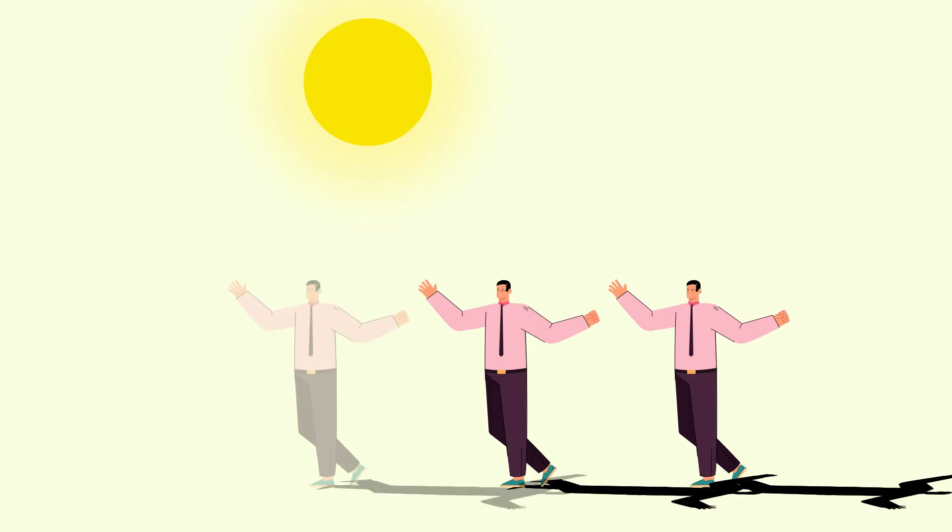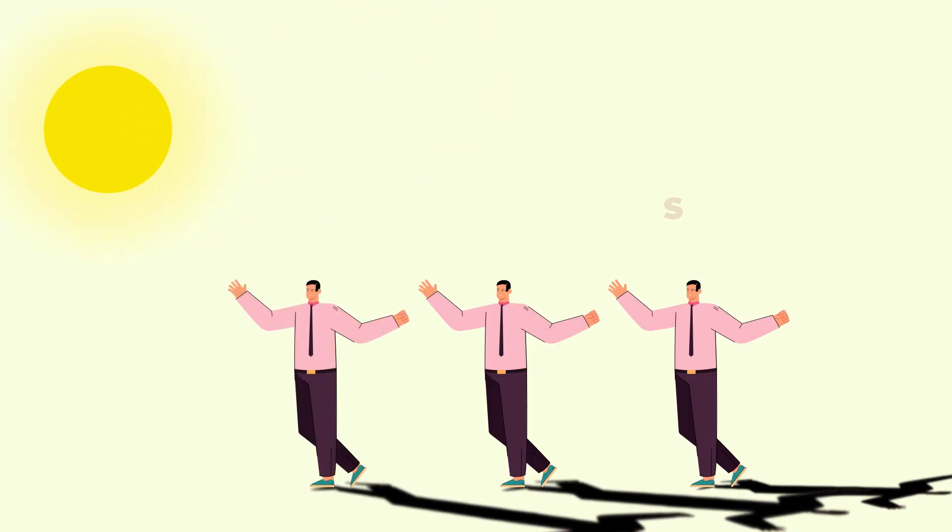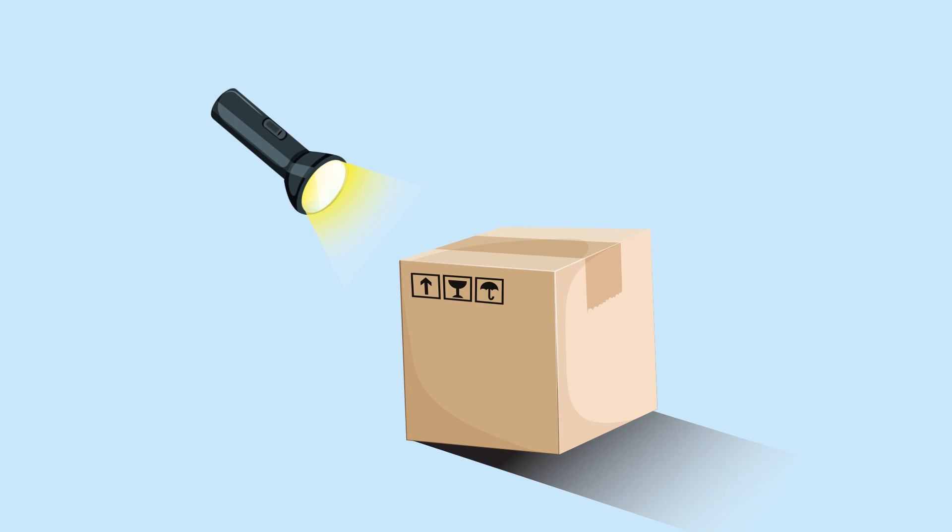The position of the light source and the object affects the size, shape, and direction of the shadow. For example, if the light source is near the object, the shadow will be big, but as the distance between them increases, the size of the shadow becomes smaller.